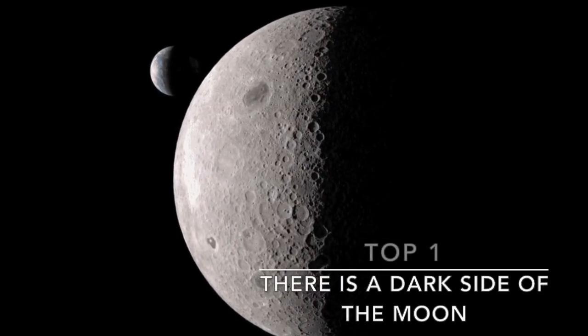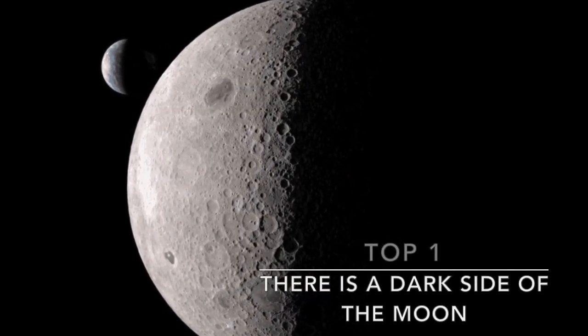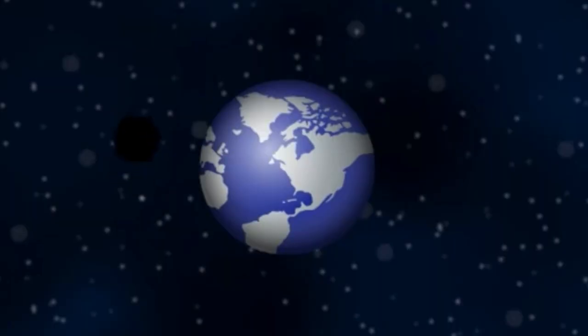Top 1. There is a dark side of the moon. The moon has no permanent dark side, I prefer calling it the far side. Because it is tidally locked with the Earth, it rotates exactly one revolution around the Earth. That is why we only see one side of the moon even though the sun sees all.